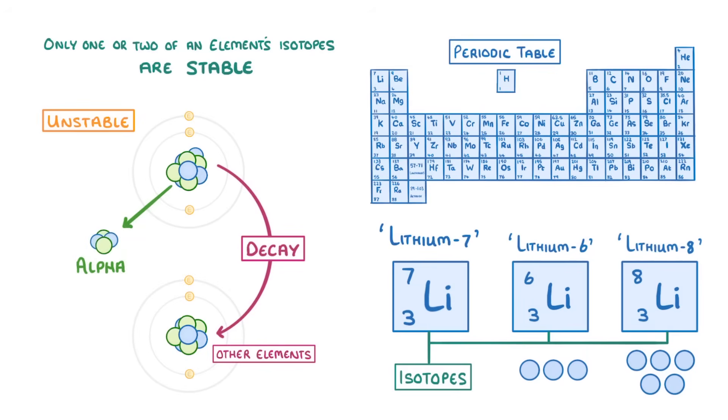Like alpha, beta, or gamma radiation. We call this process radioactive decay, and we'll take a look at it in the next video.